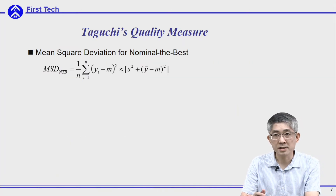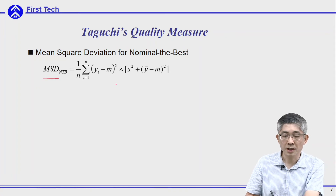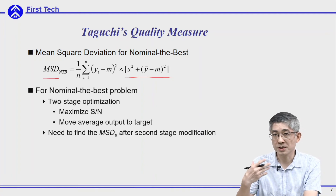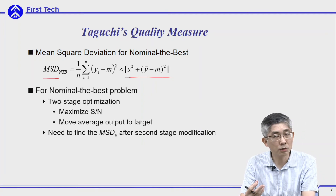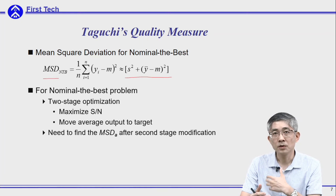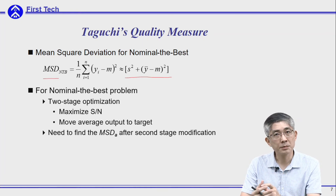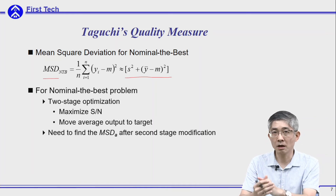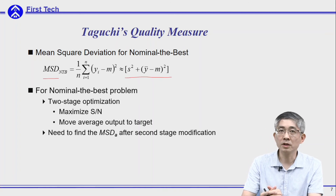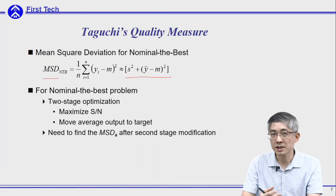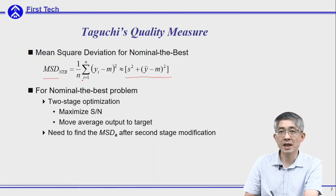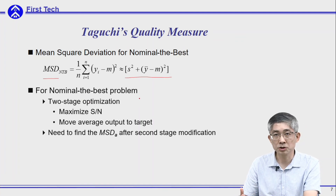For nominal-the-best, it is very similar — the mean squared deviation can be represented by the summation of two terms. We substitute this mean squared deviation into the logarithm transformation to get the SN ratio for the nominal-the-best problem. For Taguchi's understanding of nominal-the-best, the average output should be right at the target. So a design with a smaller SN ratio is not good enough; he would like to move the average output to the target using a two-step optimization method, which we will introduce later.